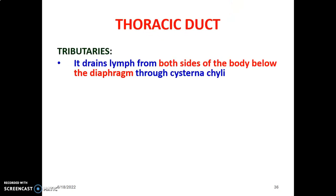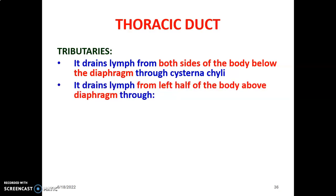The tributaries of the thoracic duct: all areas of the body below the diaphragm, on both right and left sides, drain to the thoracic duct through the cisterna chyli. So below the diaphragm, all lymphatics enter the cisterna chyli, are drained by the thoracic duct, and empty into the left brachiocephalic vein. Above the diaphragm, the thoracic duct only drains lymph from the left half of the body — so it drains both sides below the diaphragm and the left side above the diaphragm.